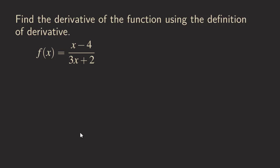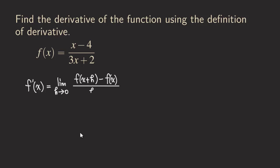First we are going to write down the definition of derivative. So we have f prime of x, which is equal to the limit as h approaching zero. Then we have f of x plus h, then minus f of x, and then all that over h. What we do is plug in x plus h into all the x's, and then also plug in the x, which is just the original function.